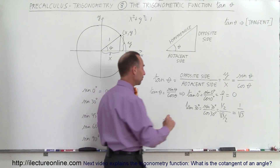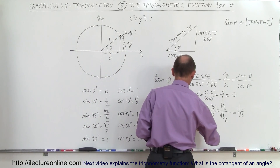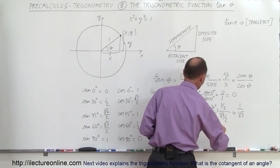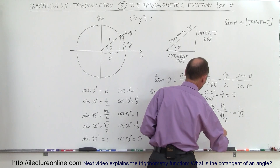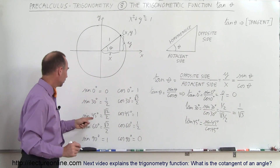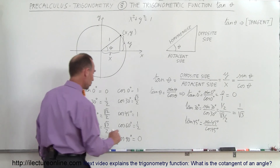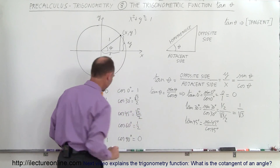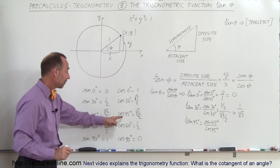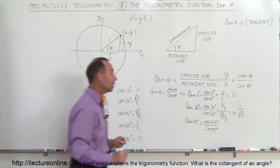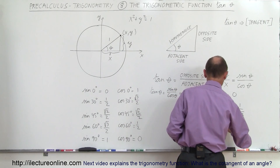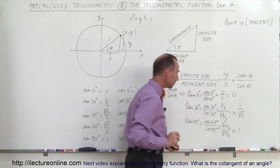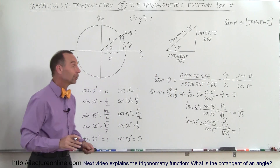The tangent of 45 degrees is equal to the sine of 45 degrees divided by the cosine of 45 degrees. At 45 degrees — let me correct that — the sine and cosine are both equal to the square root of 2 over 2. So this equals the square root of 2 over 2 divided by the square root of 2 over 2, which equals 1. The tangent at 45 degrees is 1.